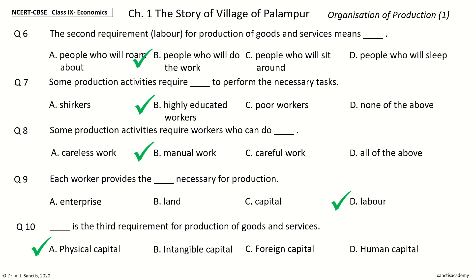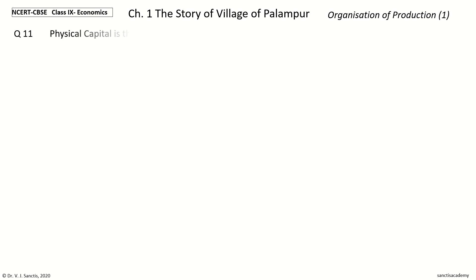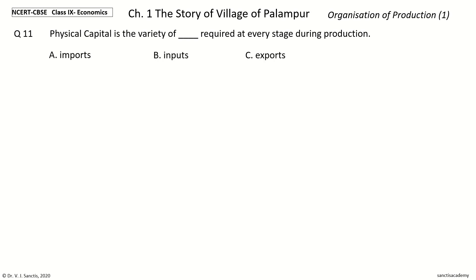Physical capital is the third requirement for production of goods and services. Question 11: Physical capital is the variety of dash required at every stage during production. The options are imports, inputs, exports, or outputs. The answer is inputs. So, physical capital is the variety of inputs required at every stage during production.